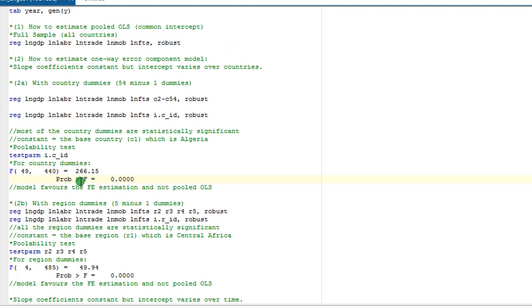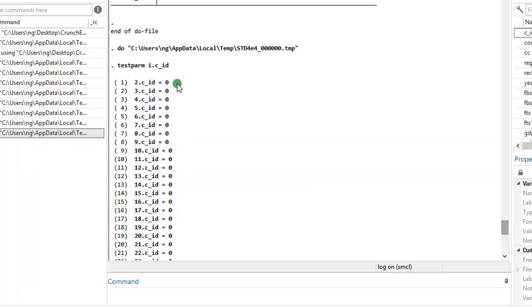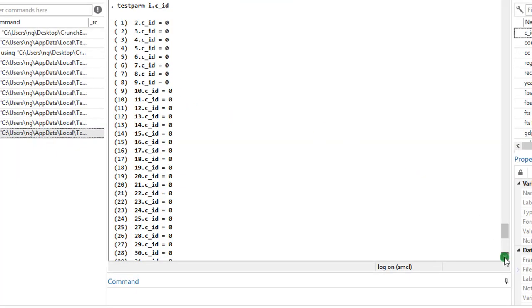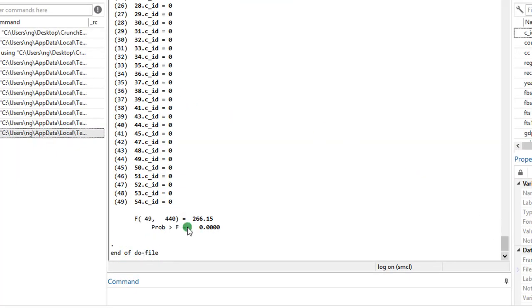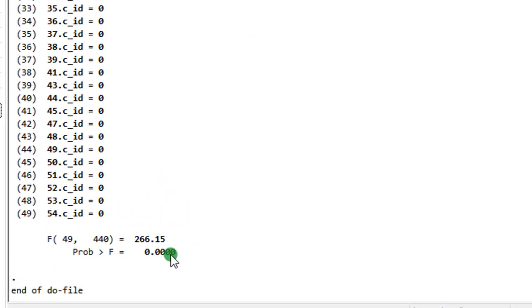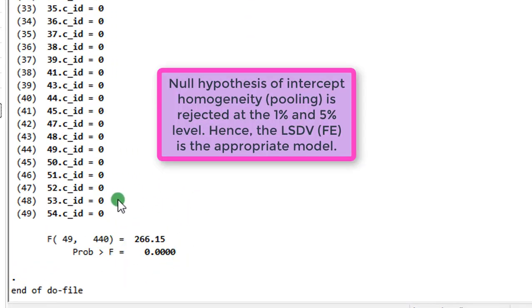Let us proceed to perform the poolability test. I have it all written here and execute the code. This is the outcome of the poolability test. Remember our decision criteria?